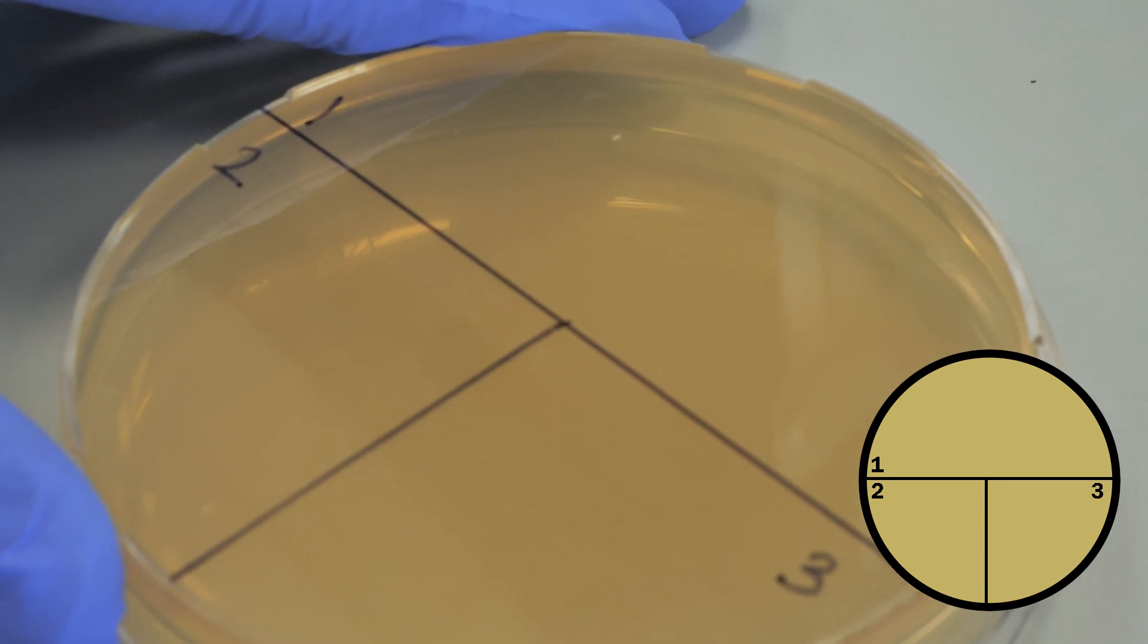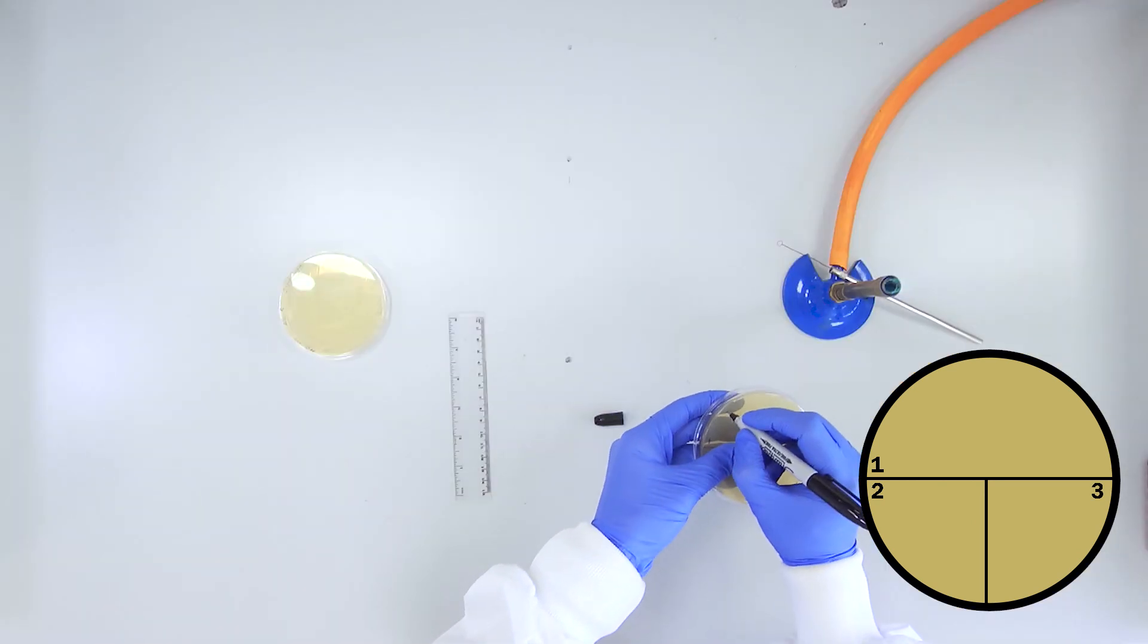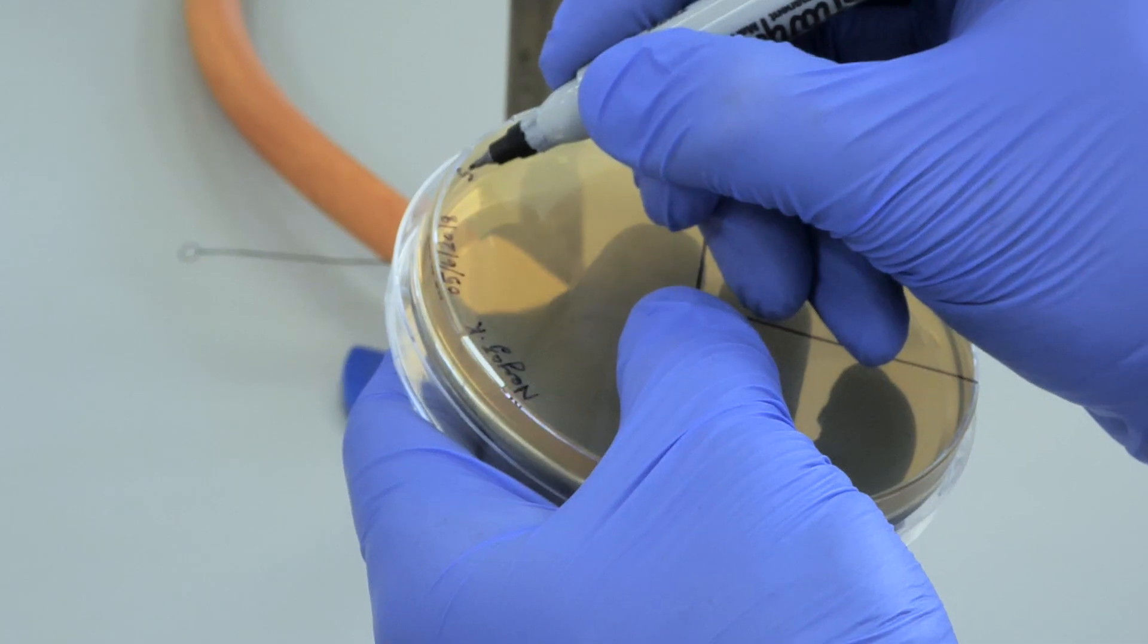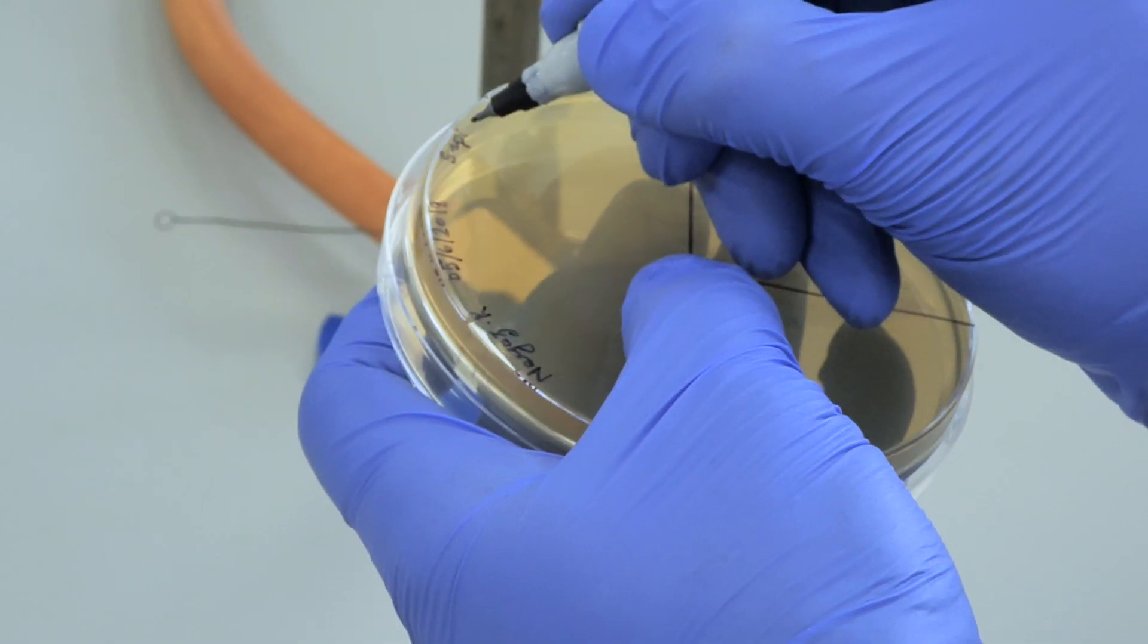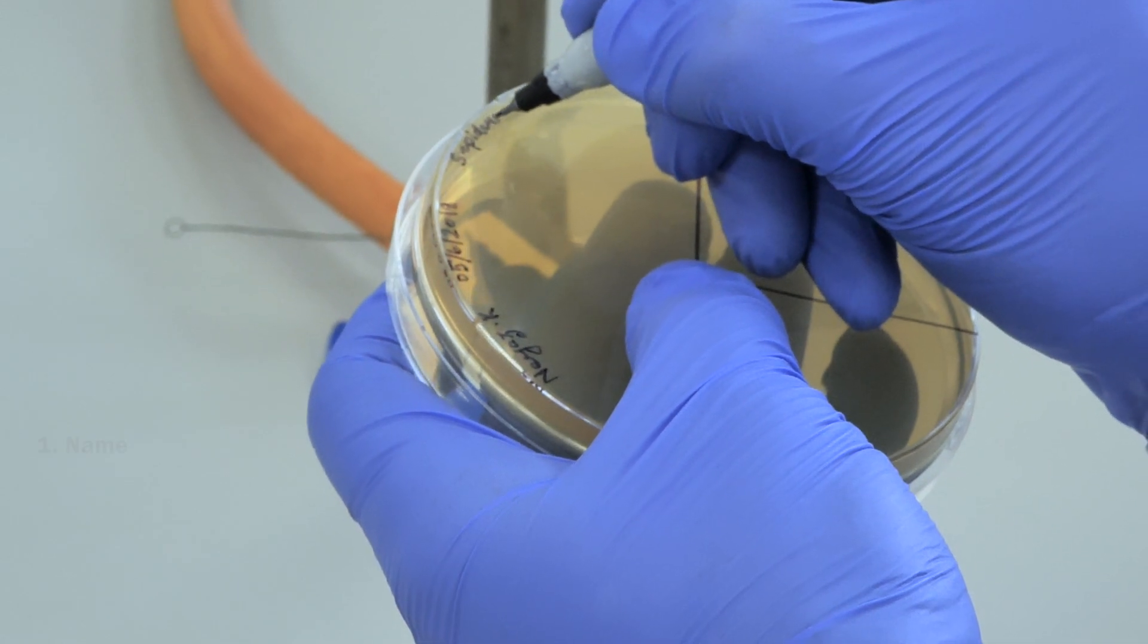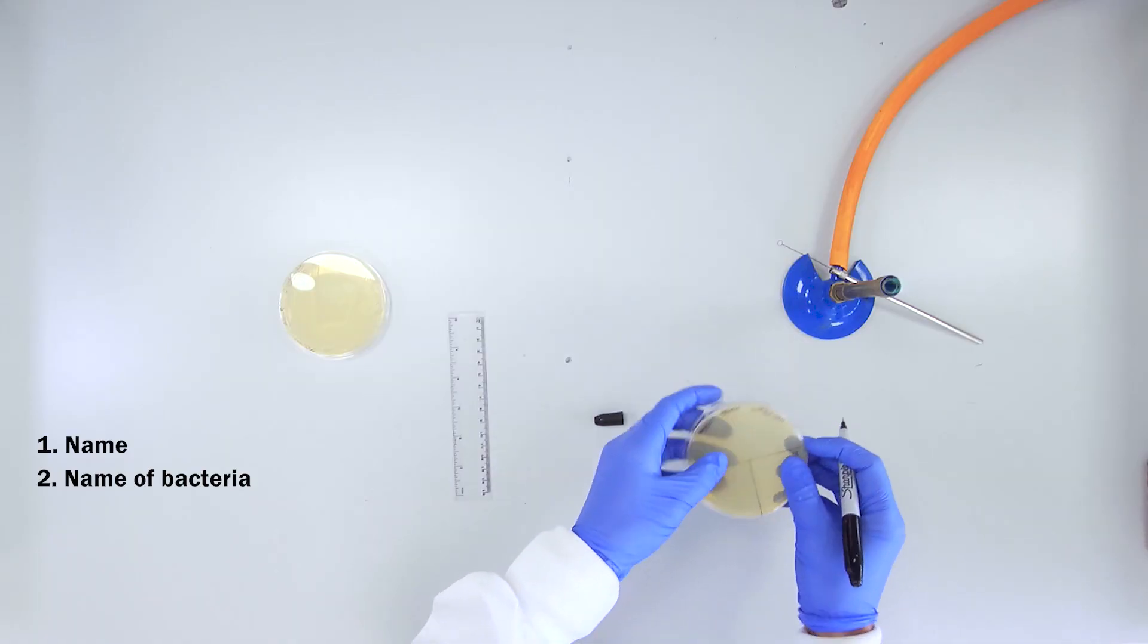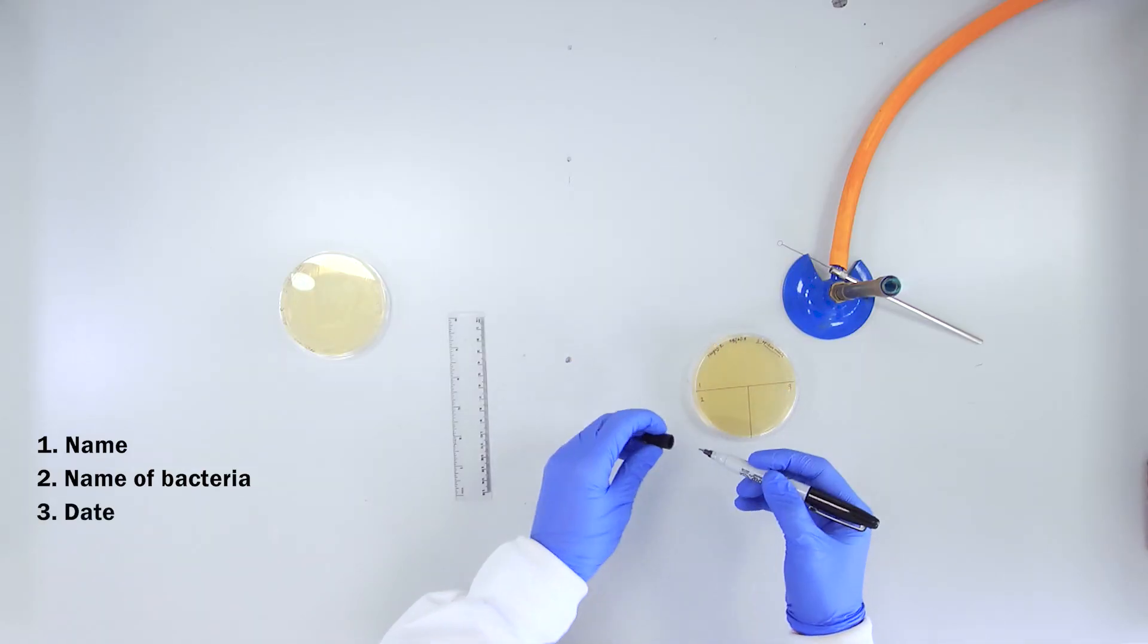Label the bottom of your TSA plate around the edge using a permanent marker. The following details should be included: your name, the name of the bacteria, which will be underlined to denote italics, and the date.